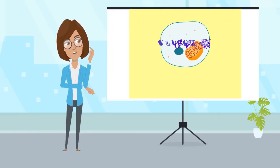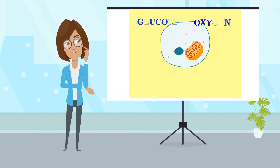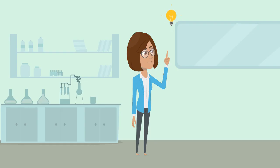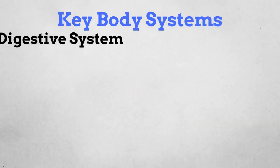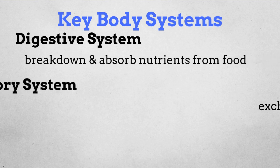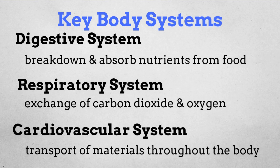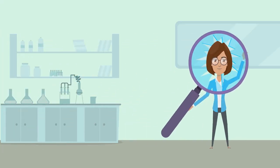So how do we get the reactants for cellular respiration? And where do the products go? Let's take a look at body systems, especially these three. Let's take a closer look.